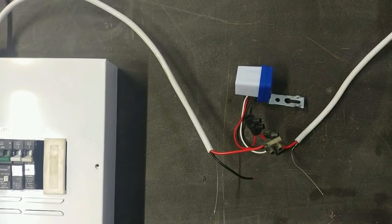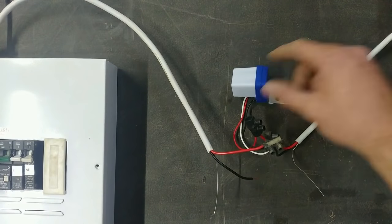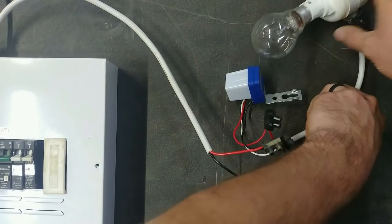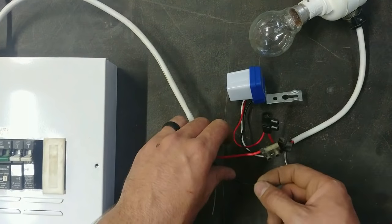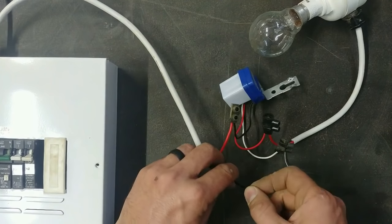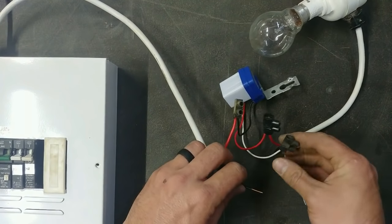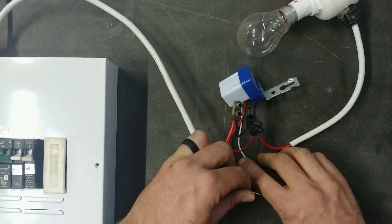Now with the neutral wire, you're going to have a neutral to the day-night switch, you're going to have a neutral to the light. So you're going to have to connect this one to both of those, in this case to the white wire and the black wire.